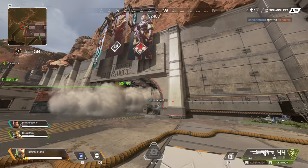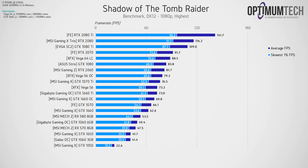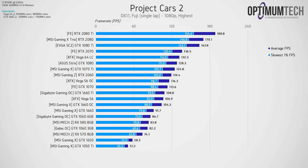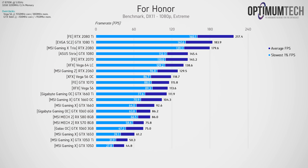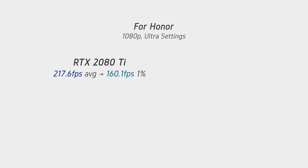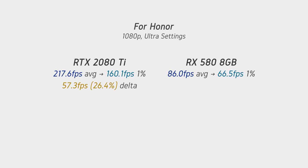Does frame rate deviation actually increase as frame rate increases? The short answer is yes, frame rate deviation does expand as we can see from these graphs. Taking For Honor as an example, comparing the 2080 Ti with the RX 580: with the 2080 Ti we're averaging 217.4 FPS with a 160 FPS 1% low average, while with the RX 580 we get a much tighter 86 FPS average and 66.5 for the 1% low. That's a massive deviation for the 2080 Ti and a much tighter spread for the RX 580. Even looking at frame rate deltas as a percentage over average frame rate, the 2080 Ti has a much larger percentage delta.